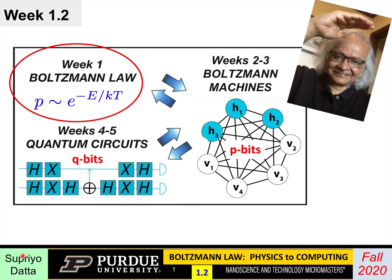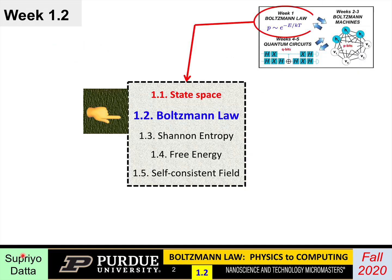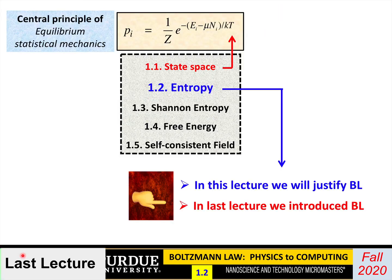Welcome to week one of our course, 'The Boltzmann Law: Physics to Computing.' This is the second lecture. In the first lecture, we introduced the Boltzmann Law — the central principle of equilibrium statistical mechanics that says in equilibrium, the probabilities of the different states are given by this expression. In this lecture, we'll try to justify it.